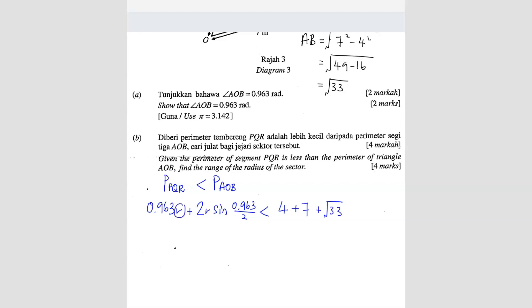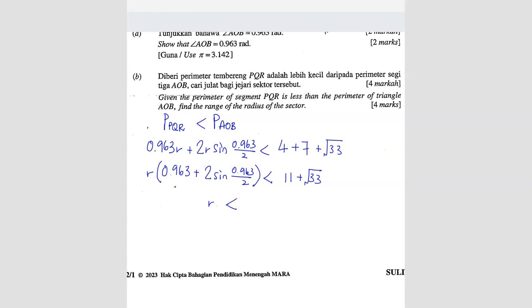So we want to find R, the range of R. So here you got R, here you got R, we just have to factorize them out. So you get R times 0.963 plus 2 sine 0.963 over 2, less than 11 plus square root 33. So R is going to be less than 11 plus square root 33 over 0.963 plus 2 sine 0.963 over 2. Straight away type this whole thing in your calculator. You'll get your answer. So R is less than 8.863 meter.